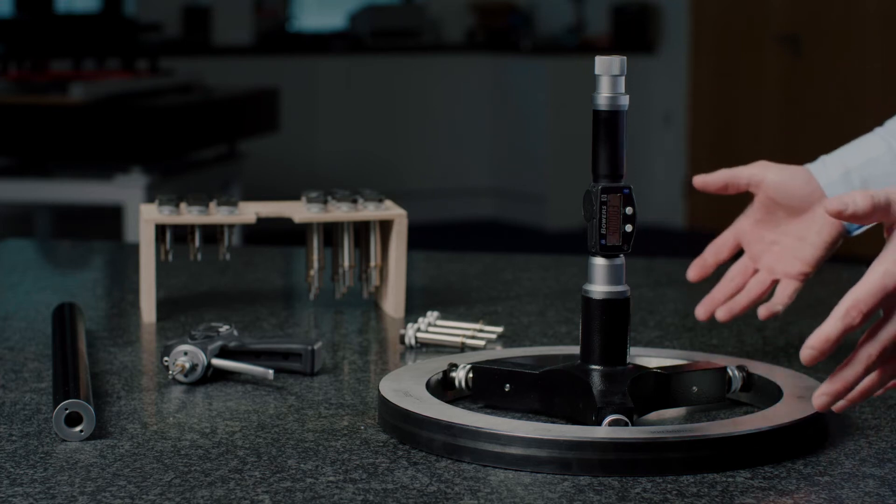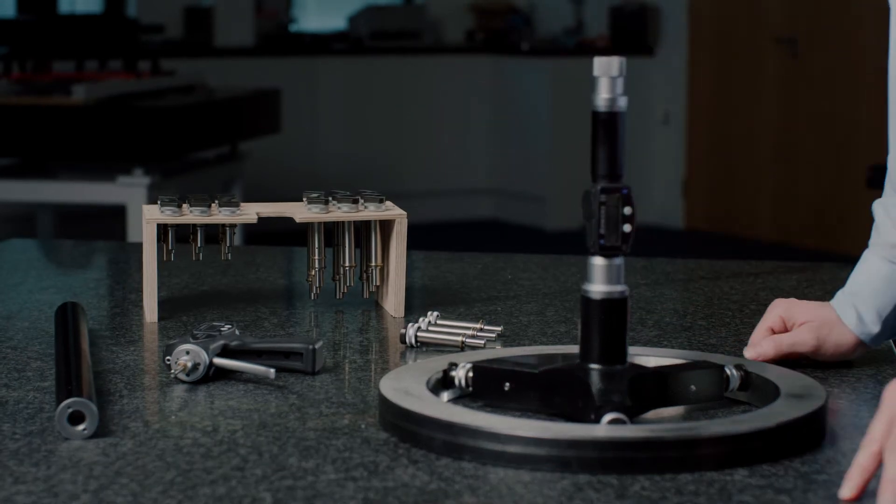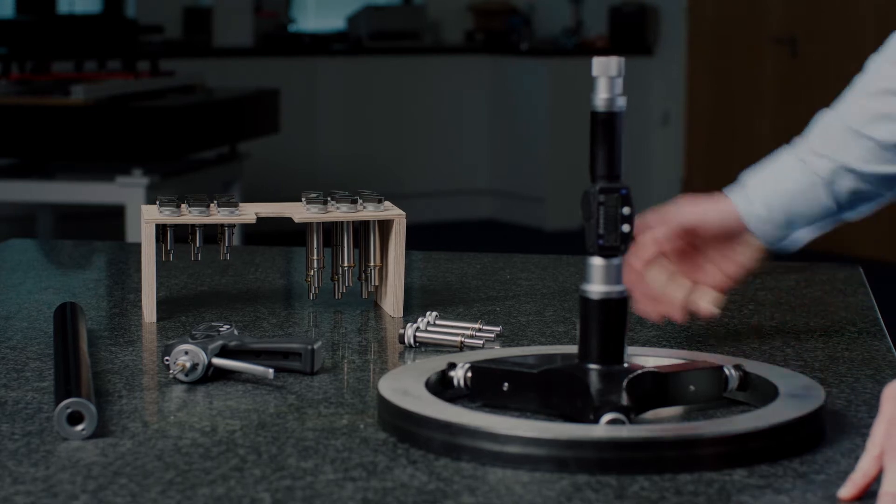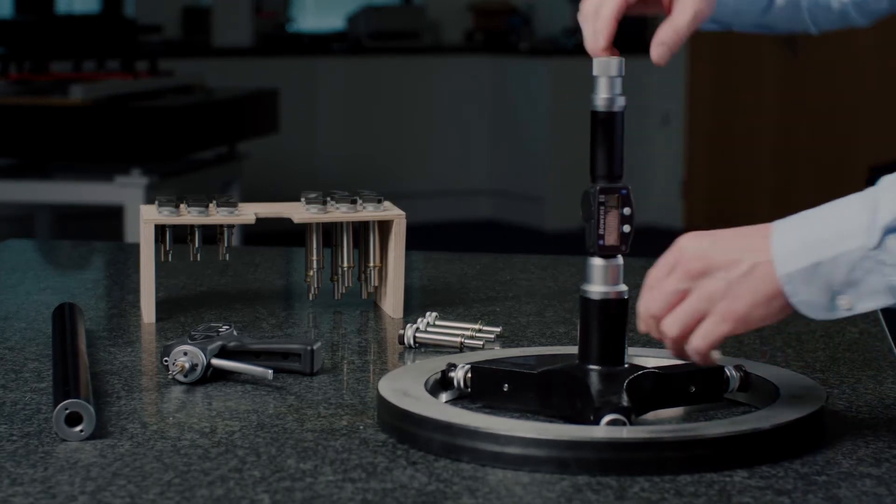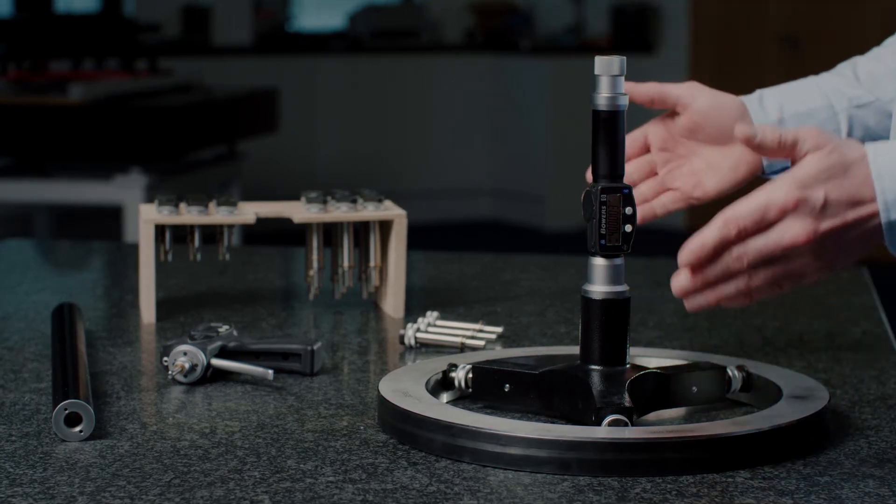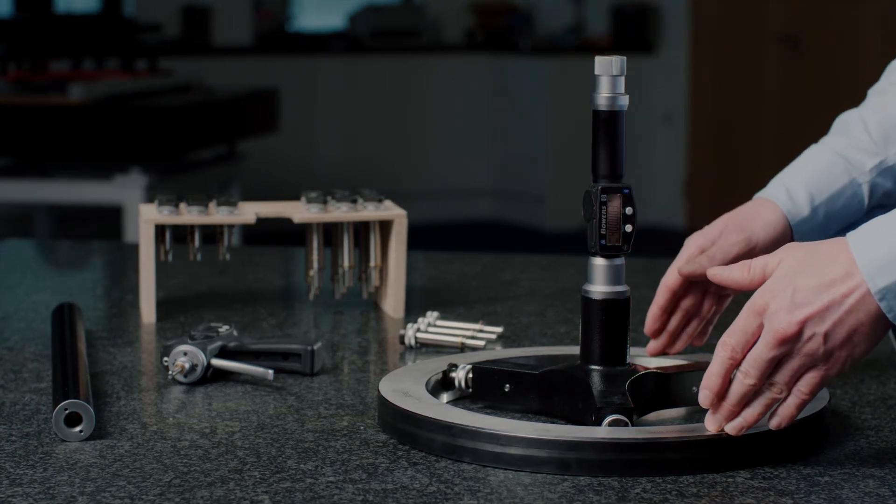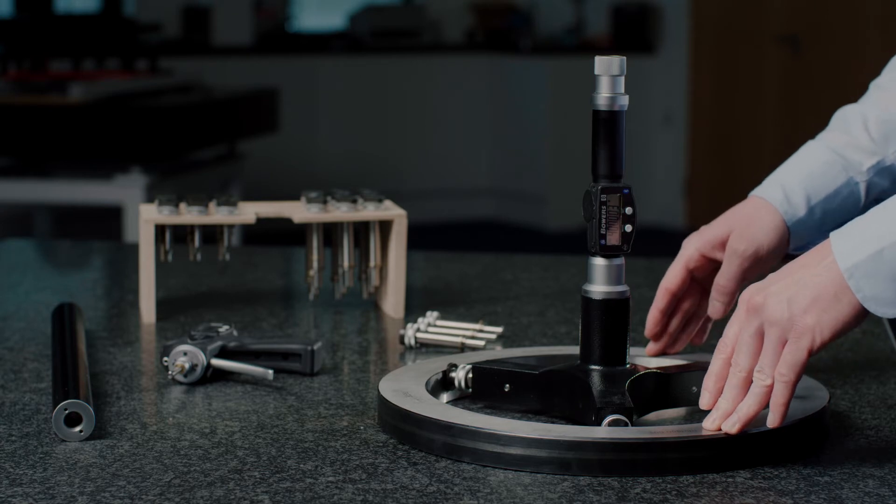To achieve these measurements, there is a range of interchangeable anvils. These are easily inserted into the ball gauge and used as a preset. The bonus of this is we use one common setting ring, which is a 300 millimeter setting ring.